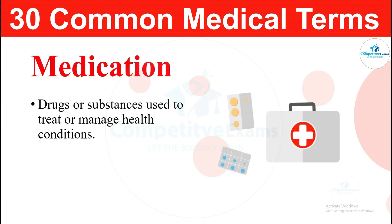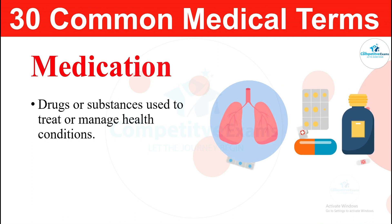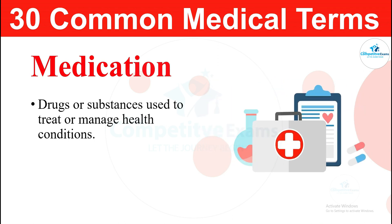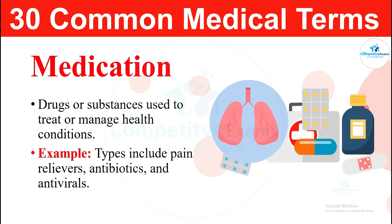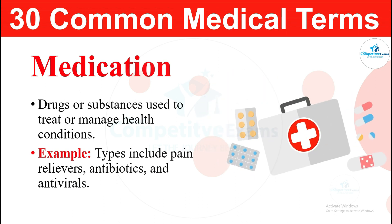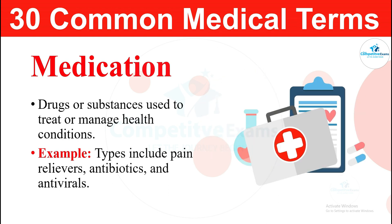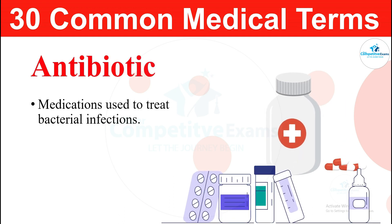Medication is drugs or substances used to treat or manage health conditions. Types of medication can include pain relievers, antibiotics, and antivirals. The next term: antibiotic. Antibiotic is a medication used to treat bacterial infections. It works by killing or inhibiting the growth of bacteria.